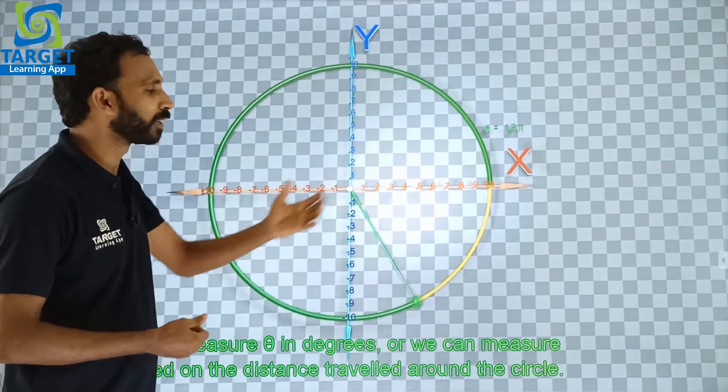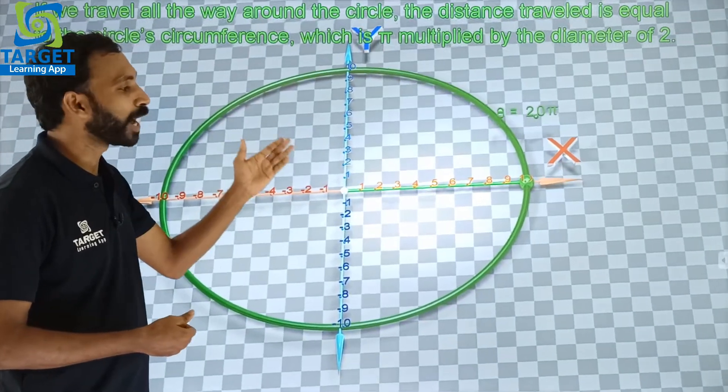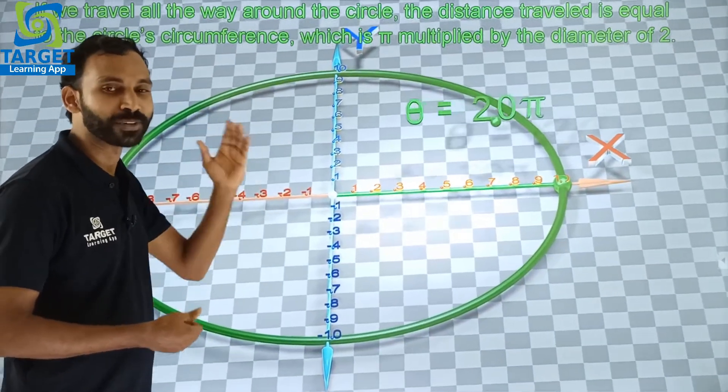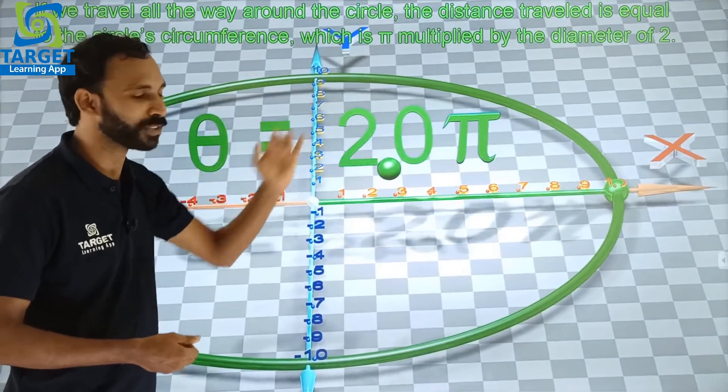If you travel all around the circle, the distance travelled is 2 pi r, that is the circumference of the circle. Here it is 2 pi into 1, that is 2 pi radian.